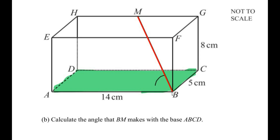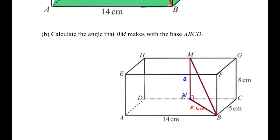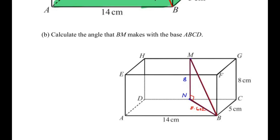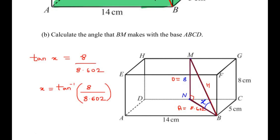To find this angle, let us refer to the diagram from the first part of this question, where we found the length BN. If we find the angle between BM and BN, that will be the same as the angle made by BM with the base ABCD. Let us call this angle BMN as x. The side opposite to angle x is 8, making it the opposite side. BM is the hypotenuse and 8.602 is the adjacent side. Since we have the opposite and adjacent sides, we use the tangent ratio.